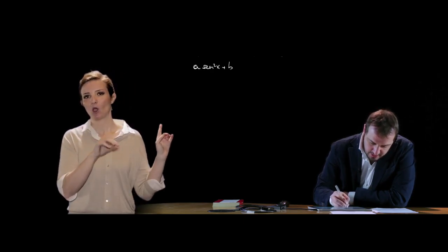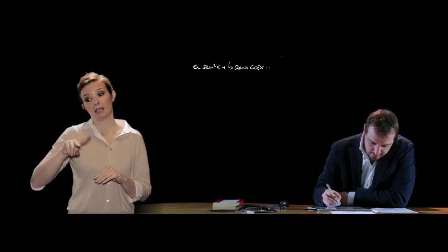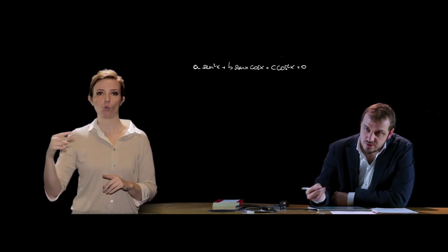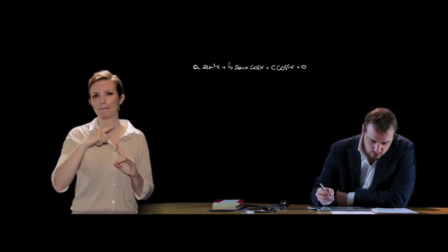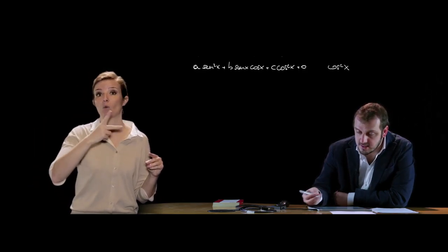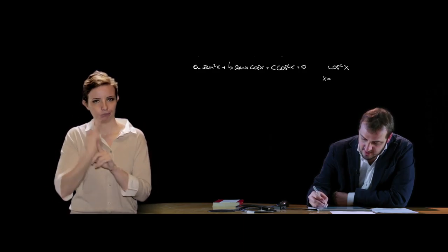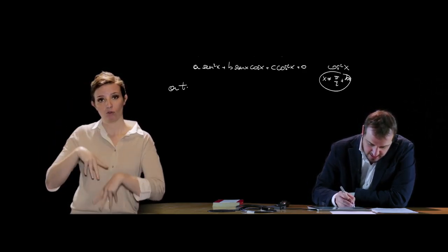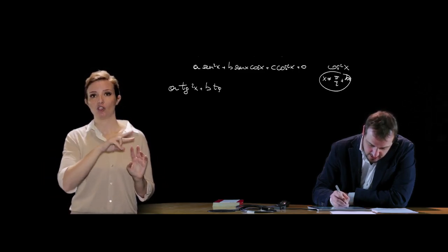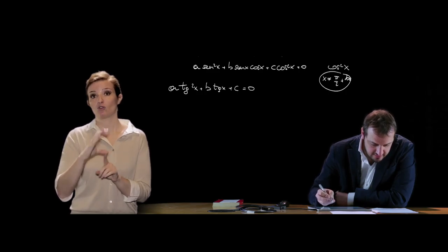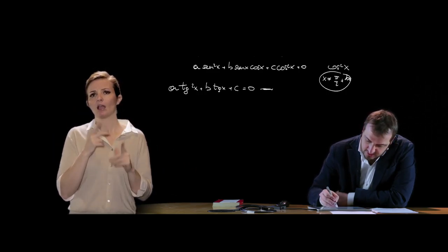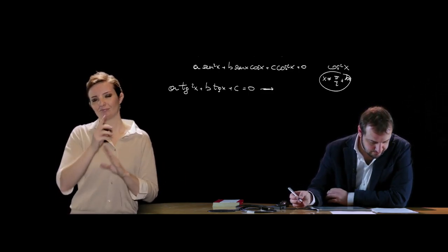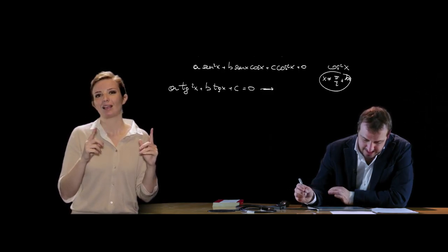Le ultime equazioni che vogliamo trattare sono quelle omogenee di secondo grado in seno e coseno: a·sen²x + b·sen x·cos x + c·cos²x = 0. Come per quelle di primo grado, è possibile dividere tutti i membri per cos²x (con x ≠ π/2 + kπ), ottenendo a·tan²x + b·tan x + c = 0, da risolvere in tangente.